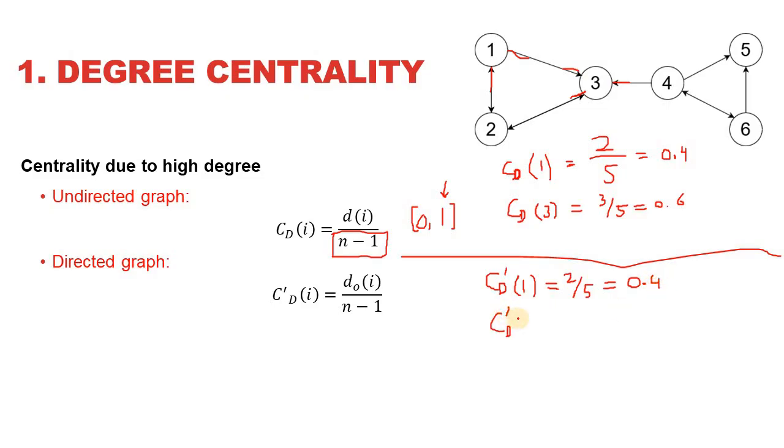Now let's calculate the degree centrality for node 3 considering a directed graph, and that is going to be equal to the out-degree of node 3, which is 1, because it only has an out-edge to node 2. This would give it an out-degree of 1 divided by 5, which is going to be equal to 0.2. So in this way the degree centrality of any node can be calculated considering either a directed graph or an undirected graph.